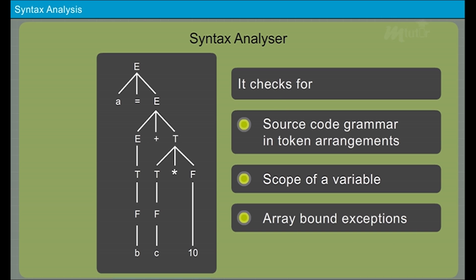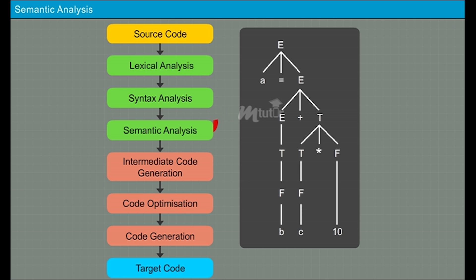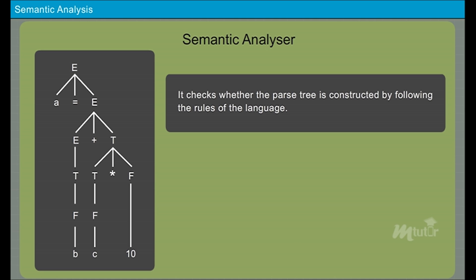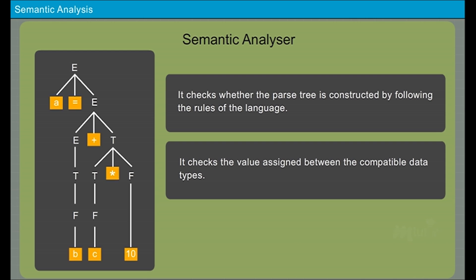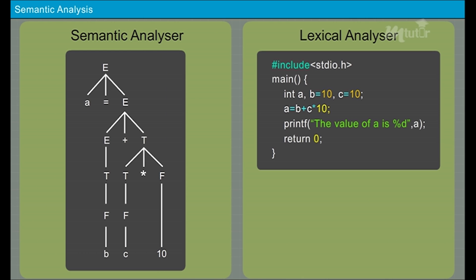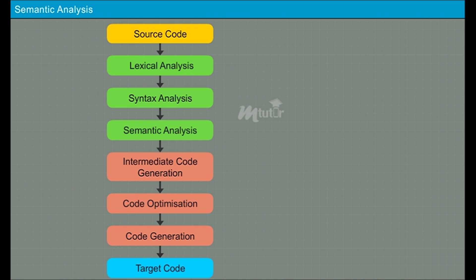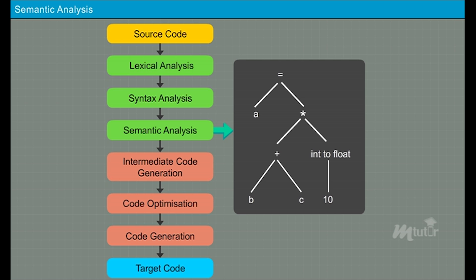The input for the semantic analyzer is the parse tree. This phase checks whether the parse tree is constructed by following the rules of the language. For example, it checks that values are assigned between compatible data types. This analyzer keeps track of identifiers, their types, and expressions, and also checks whether identifiers are declared before use. The output of this phase is an annotated parse tree — annotation refers to the addition of attributes and rules to the syntax tree.